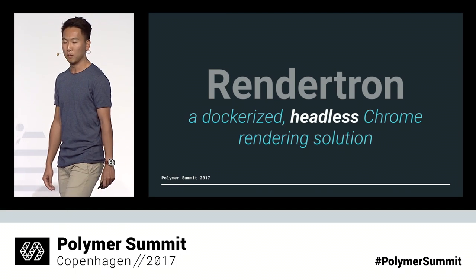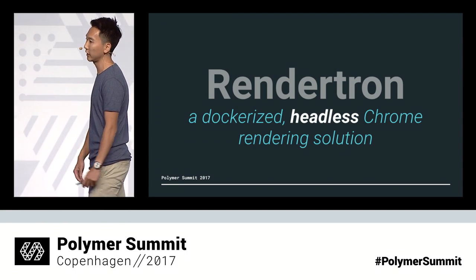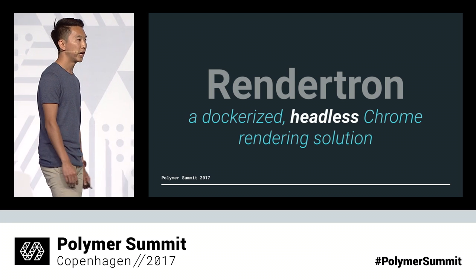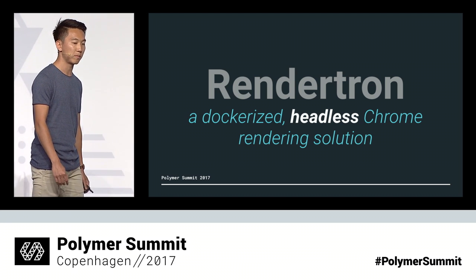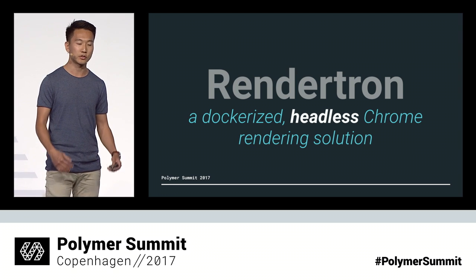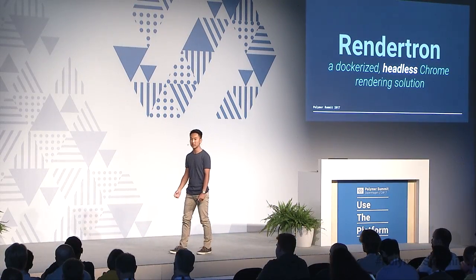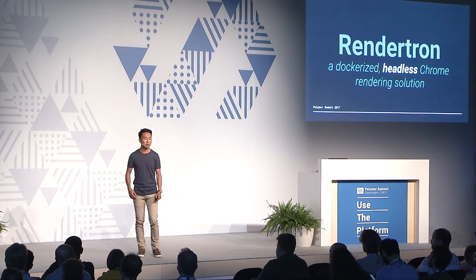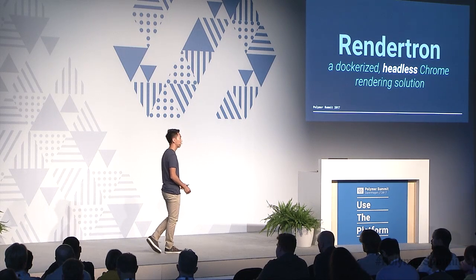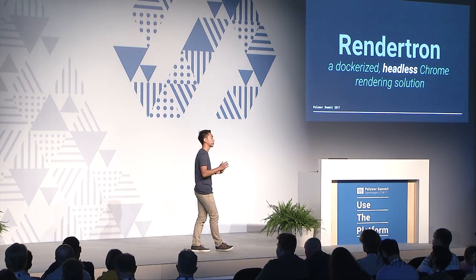So what about headless Chrome? It was introduced in Chrome 59 for Linux and Mac, Chrome 60 for Windows, and it allows Chrome to be run in environments which don't have a UI interface, such as a server. This means that you can now use Chrome as any part of your tool chain — for automated testing, for measuring the performance of your application, generating PDFs, amongst many other things.